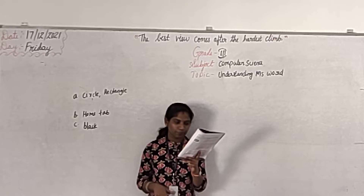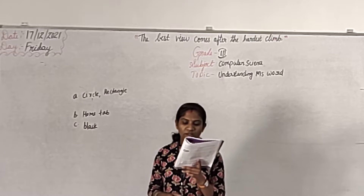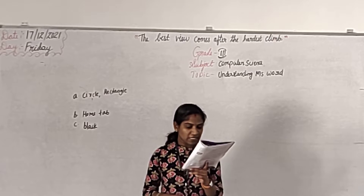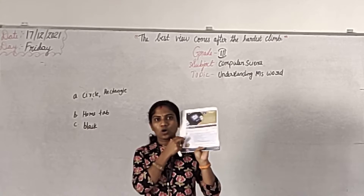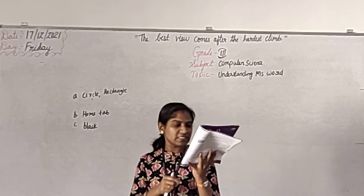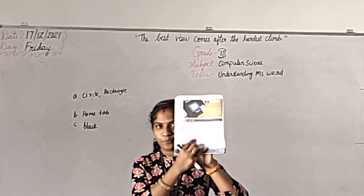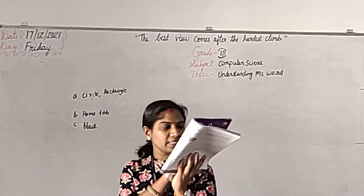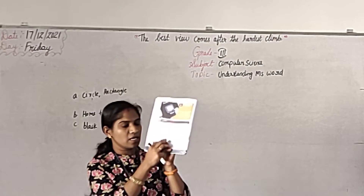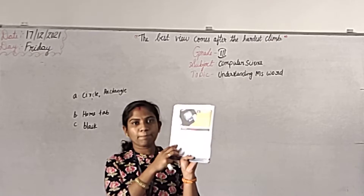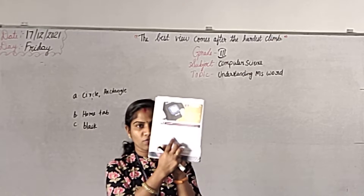Let us do one exercise: draw a line to match the word given in column A with column B, to revise terms learned in previous lessons. First one — Notepad: Notepad is a text editor. Match it. Then Mouse: Mouse is a pointing device. Match it. Then CPU: CPU is the brain of a computer.